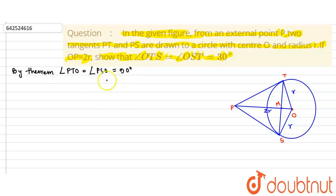By theorem, these two angles are 90 degrees as T is the point of contact of tangent PT and S is the point of contact of tangent PS. Therefore, these two triangles are right angled.